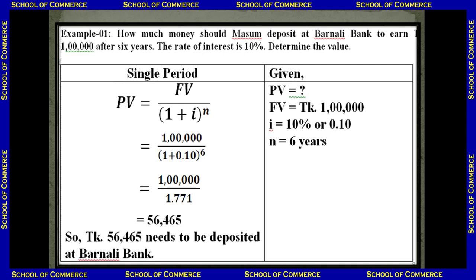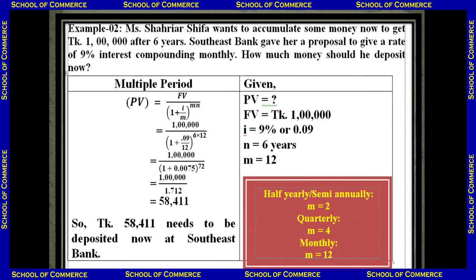Now we will go to the second type — multiple period. Multiple period means the transaction will occur more than two times. You invest a single amount of money today but receive interest not just once a year — you receive interest several times within one year. That is called multiple period.